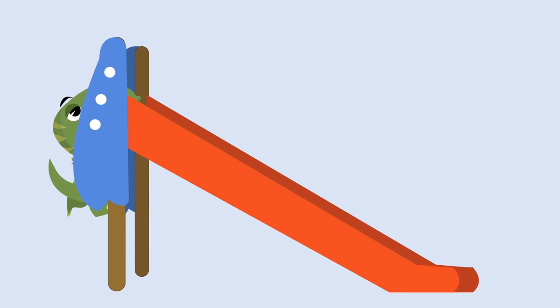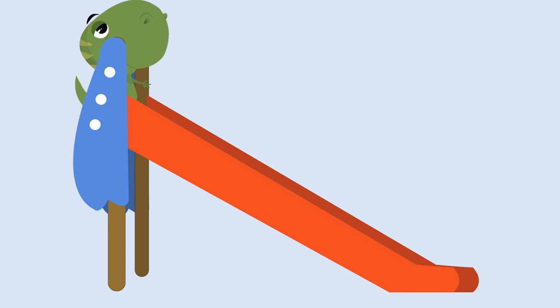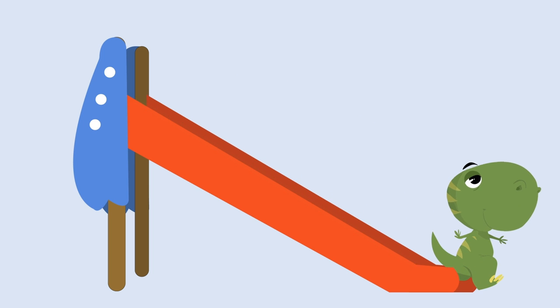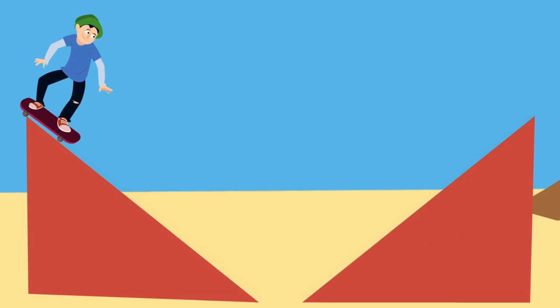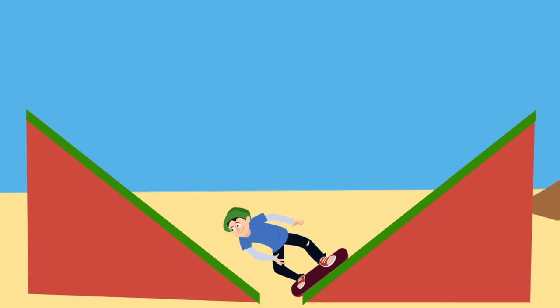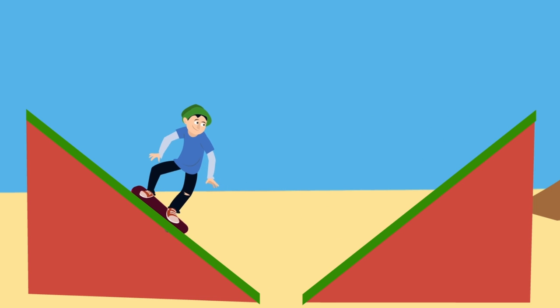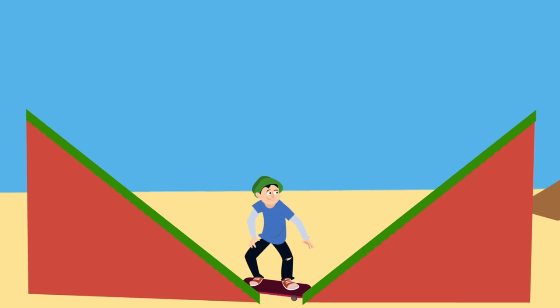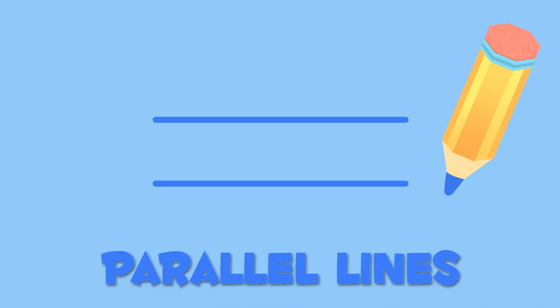Oblique lines look like this slide or like this skateboarding ramp — wow, so fast! Now here are two lines one next to the other — they're called parallel lines because they never touch.